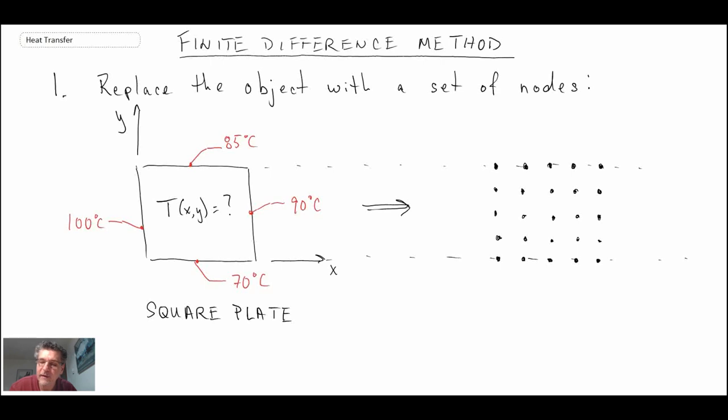What we've done is we have represented our square plate through a series of grid points. Then what we would do is we specify the grid spacing, and in this case it's delta x, delta y, and then we go through and assign node numbers to each of the individual nodes.